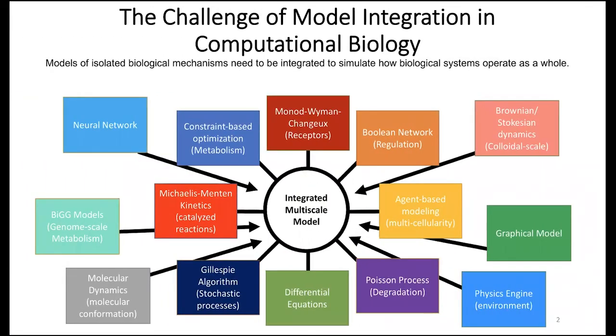To start, I want to address the challenge of model integration in computational biology. There's been a proliferation of different modeling frameworks, some of them specialized for different biological phenomena. You might have constraint-based approaches to metabolism, we've been looking at chemical reaction networks, and agent-based modeling is popular especially for multi-cellularity. I want to point to the fact that in biology, all of these different systems are integrated together and operate together, and so our models of them should also become integrated if we want to model how biological systems operate as a whole.